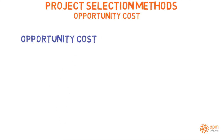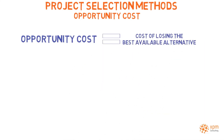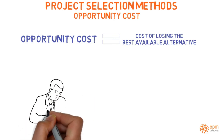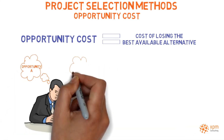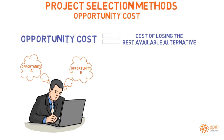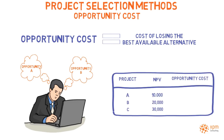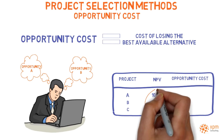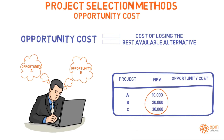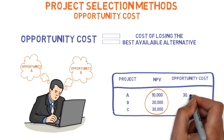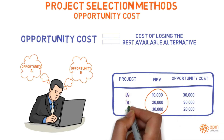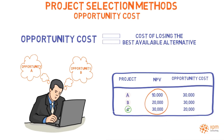The opportunity cost is the cost of losing the best available alternative to the project. This economic project selection method assumes that choices are mutually exclusive and resources are constrained. As an example, an organization may have alternative potential initiatives — projects A, B, and C — all of them with positive net present values, and all financially attractive. However, projects A and B are not a good economic decision because their best available alternative, or opportunity cost, is actually higher than their return.